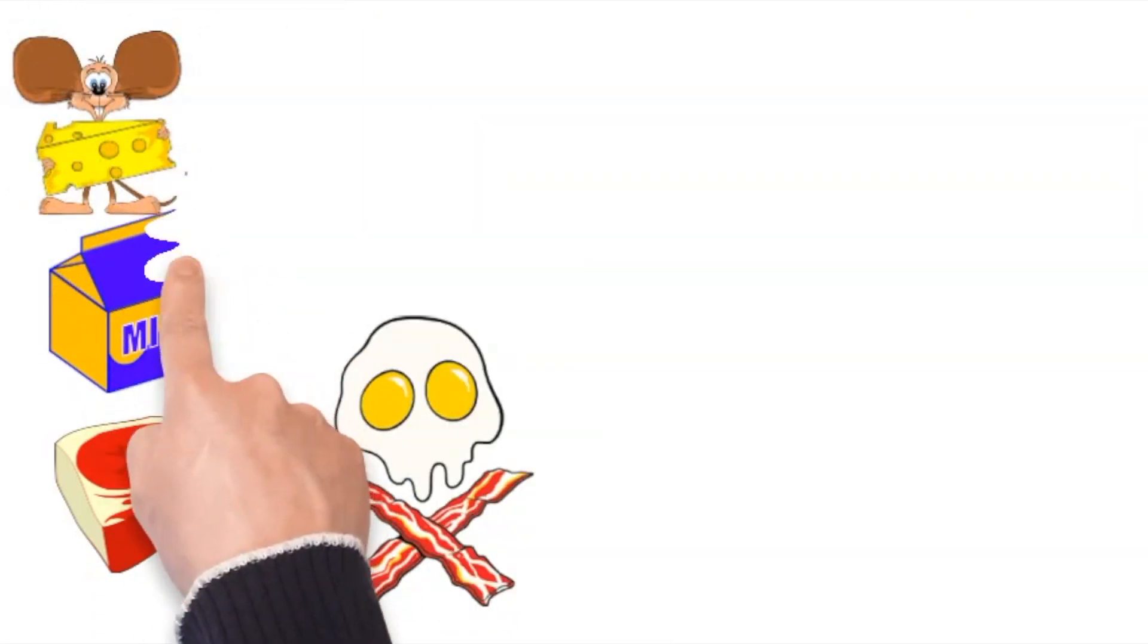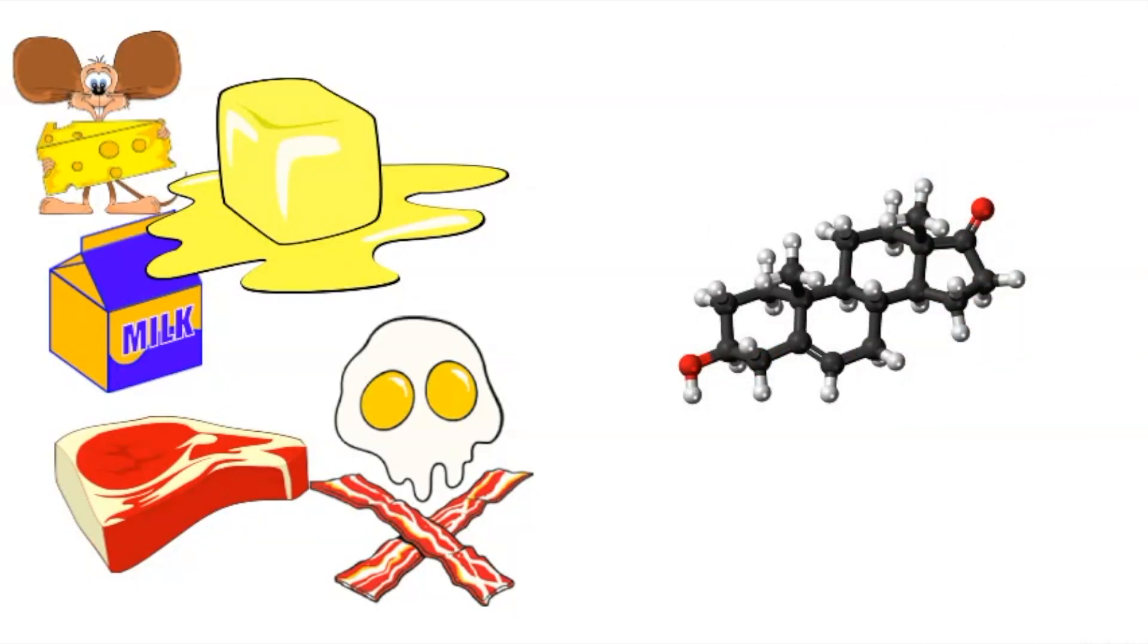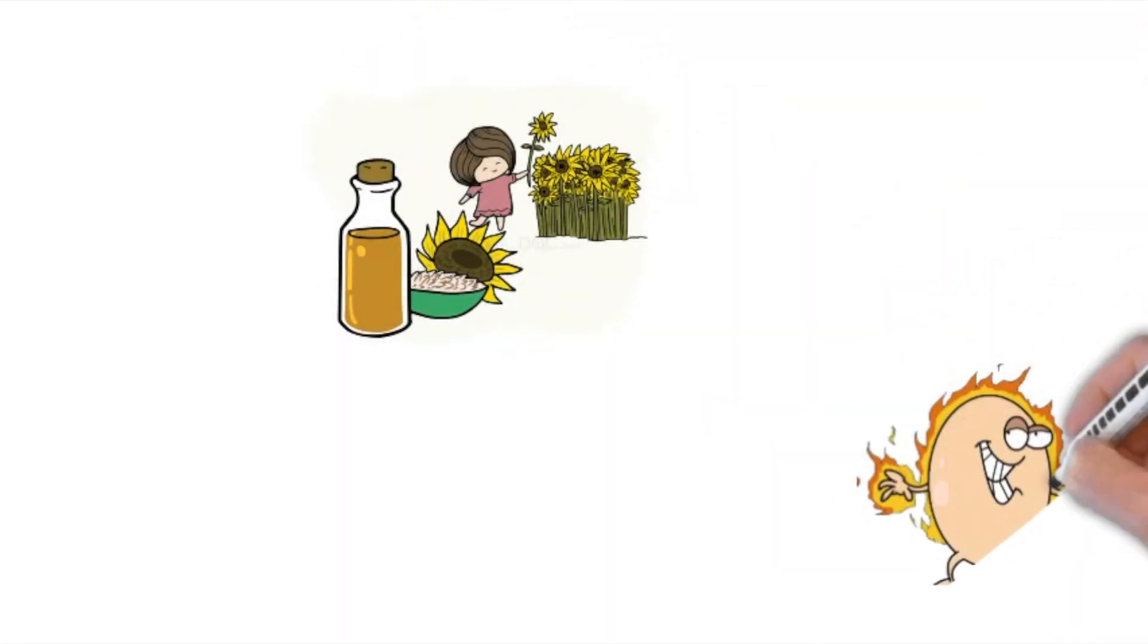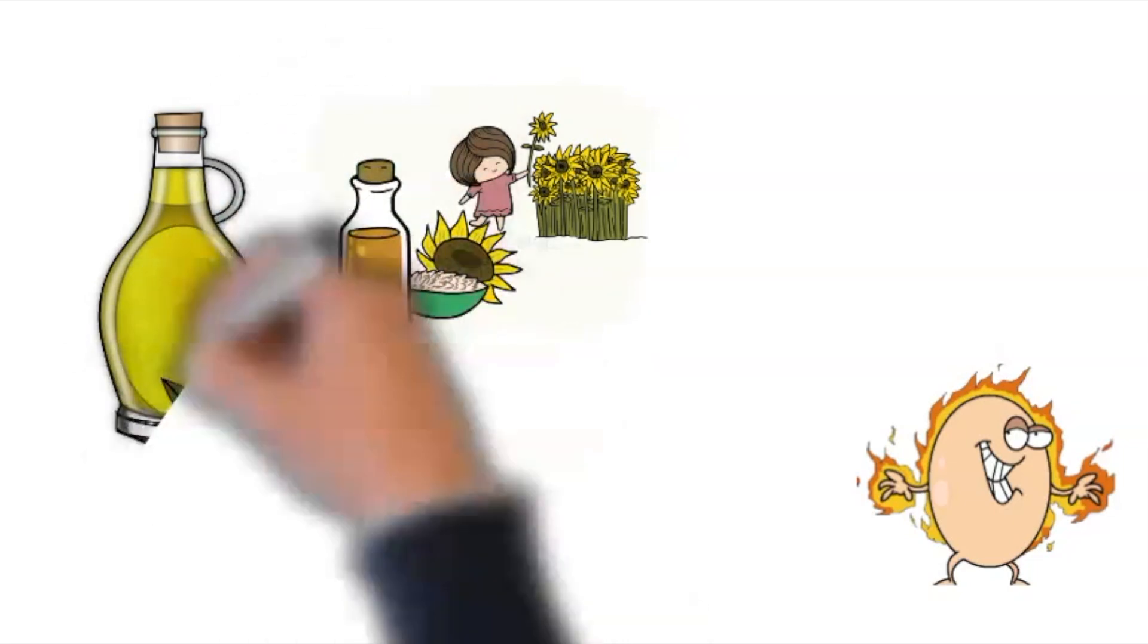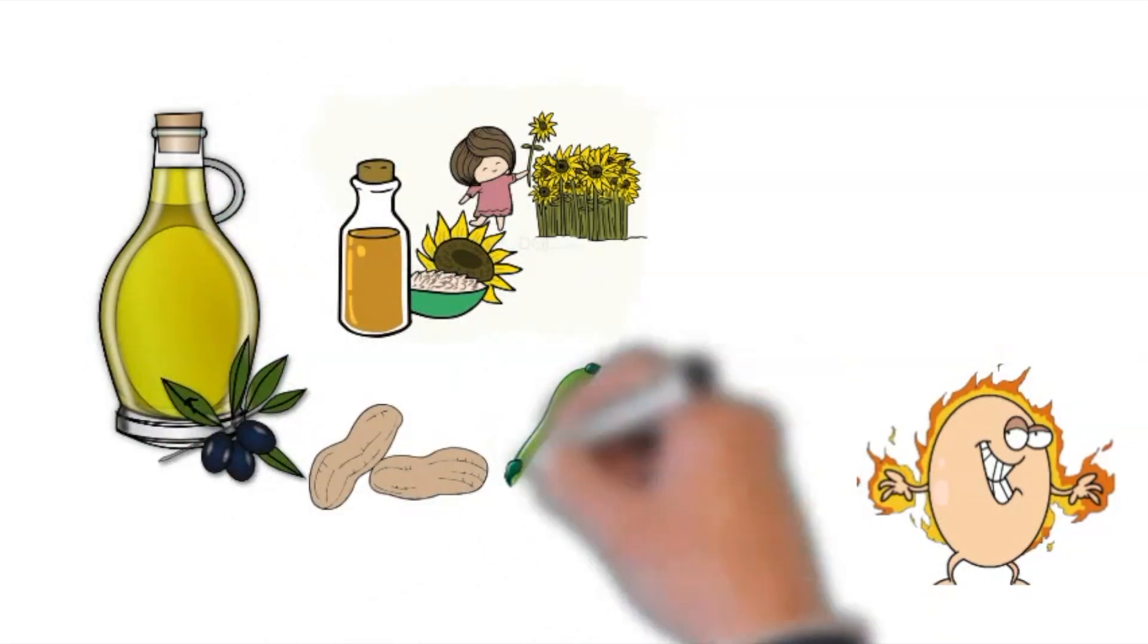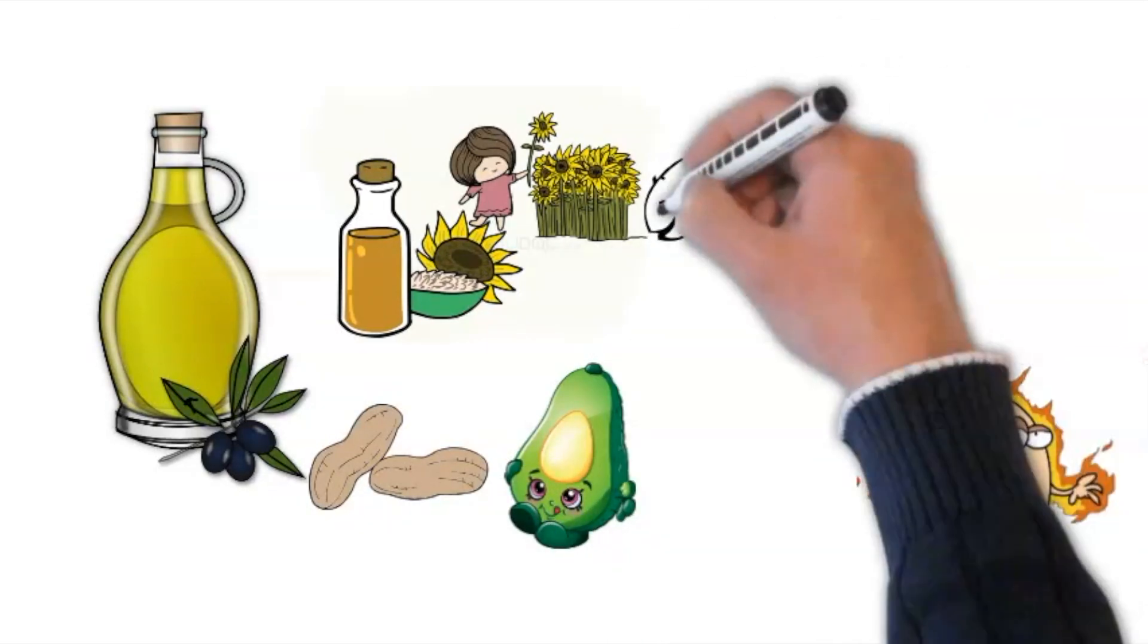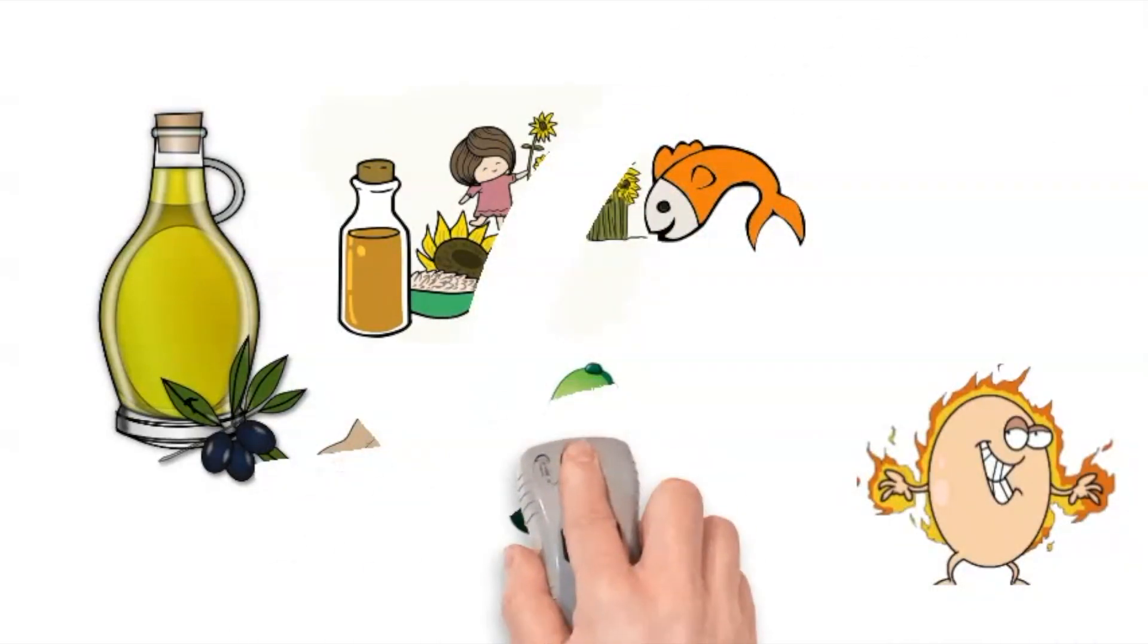The third type is unsaturated fat. In brief, if the fat you are using is fluid in room temperature, then most likely it's an unsaturated type of fat, like the ones you get from olives, nuts, seeds, avocados, and fish.